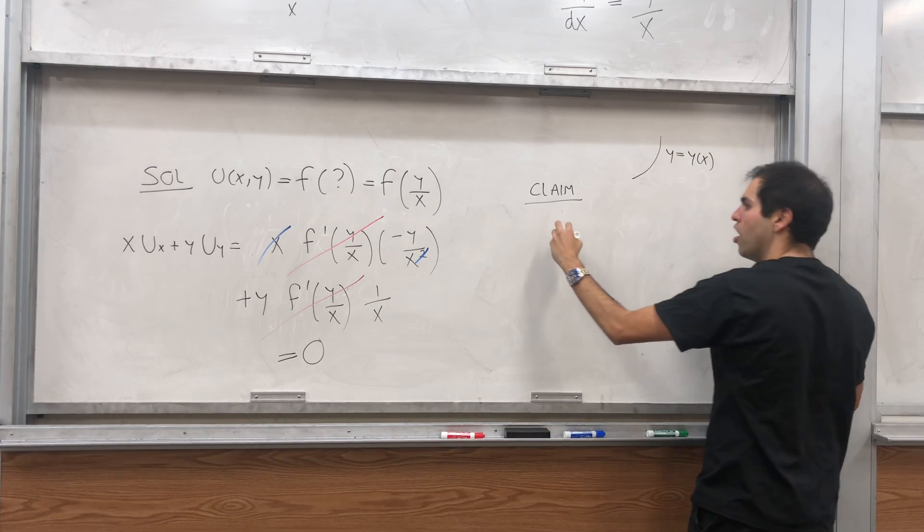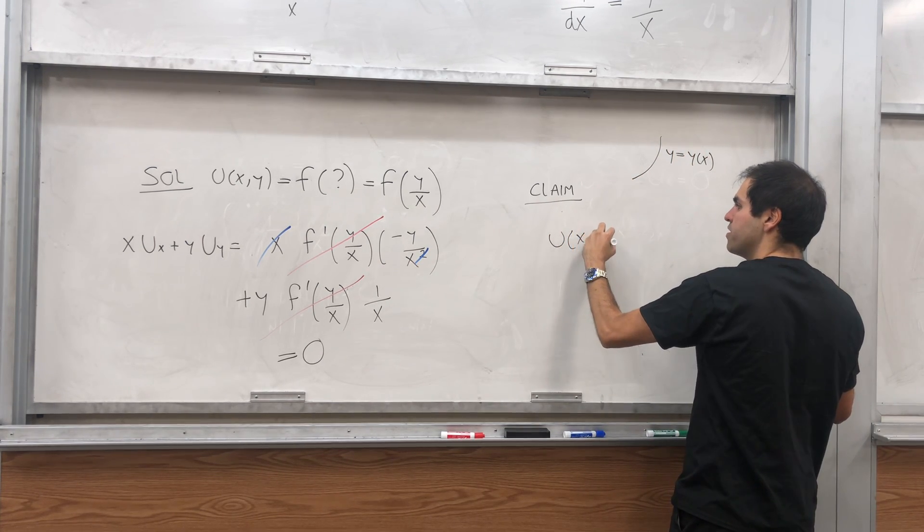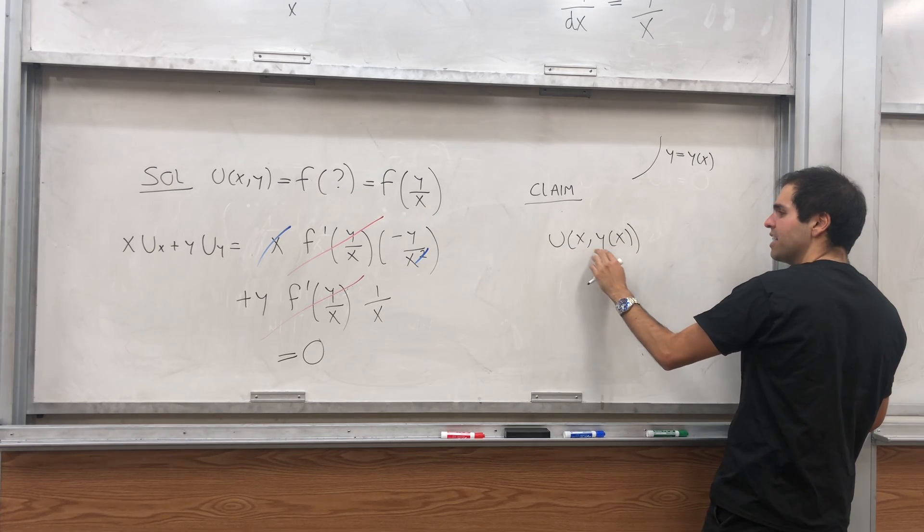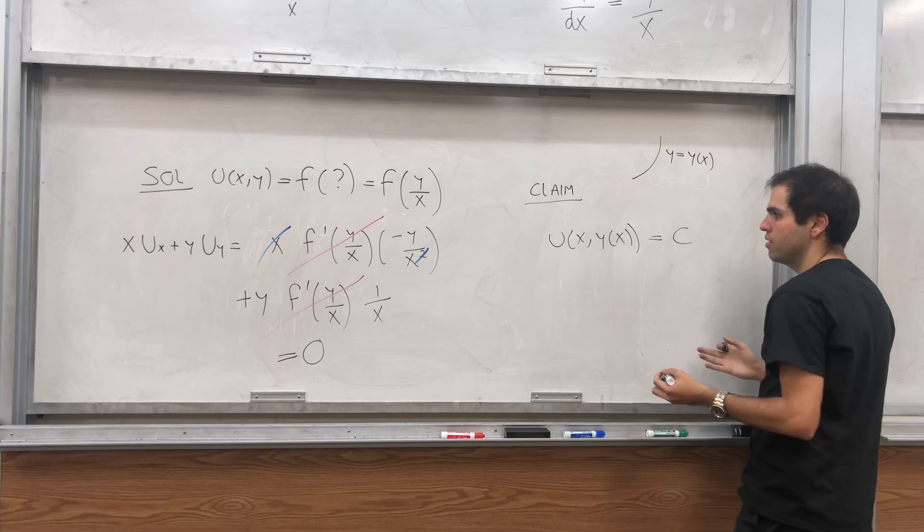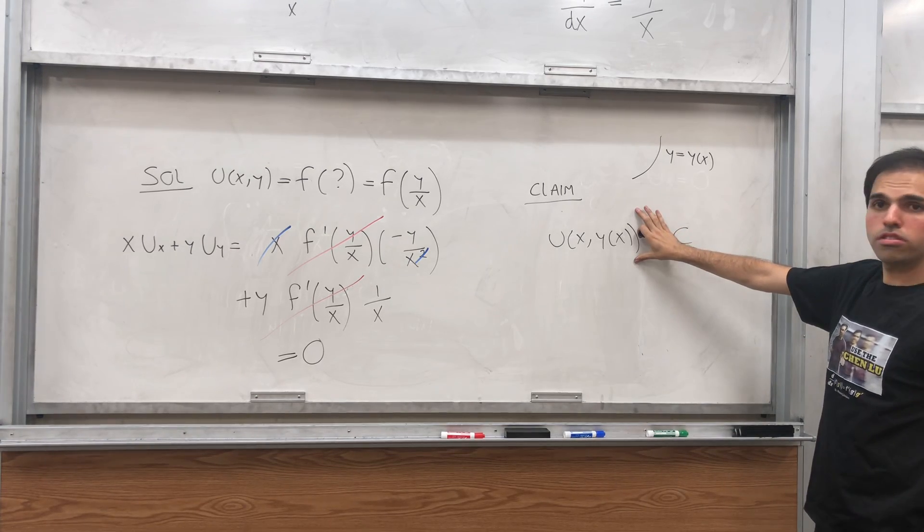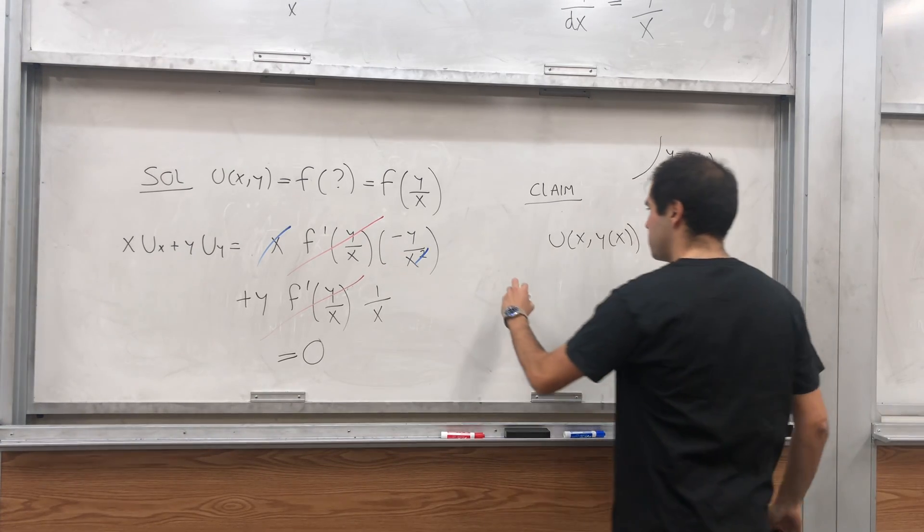Then u of, on this curve is constant. So let's claim that u of x comma y of x equals constant. In other words, let's just differentiate this with respect to x.